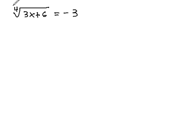To get rid of a fourth root or any type of root, we need to use an exponent. The opposite of a fourth root is a fourth power, and so we will take both sides to the fourth power.